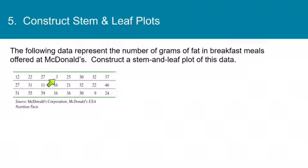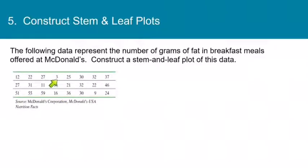For a one-digit number, the leaf is still the 1s place and the stem is anything that came before. Since nothing came before, we have to use something, so in this case the stem would be 0. It's a really common misconception to think the stem ought to be 3, but the leaf has to be the rightmost digit, so the stem actually does need to be 0.